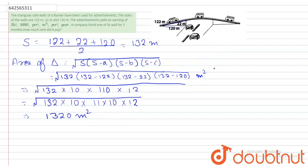this triangle. Right, now as you have seen that it is given that the advertisement yield an earning of 5000 per square meter per year. So it means that rent of 1 meter square per year is 5000, right?